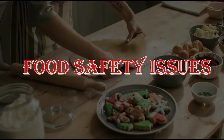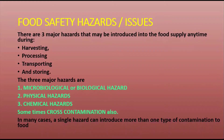Hi everyone. In the previous part we had gone through food safety introduction. Now in this part we will discuss food safety issues. Food safety issues ultimately deals with the consumption stage where the existence and level of dangers caused by foods are of chief concern. There are many food safety hazards or issues that cause food contamination, and these hazards may be introduced into the food supply at any time during harvesting, processing, transporting, and storing.